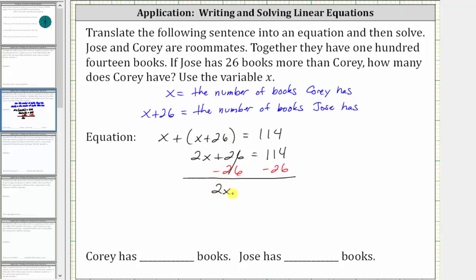The left side simplifies to 2x. 2x is equal to 114 minus 26, which is equal to 88.